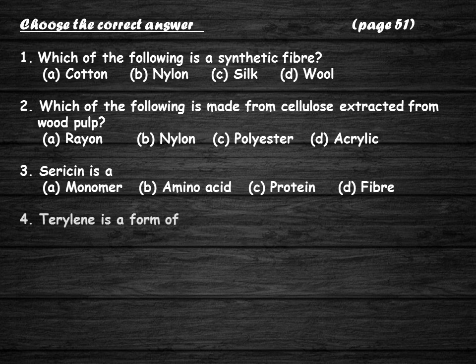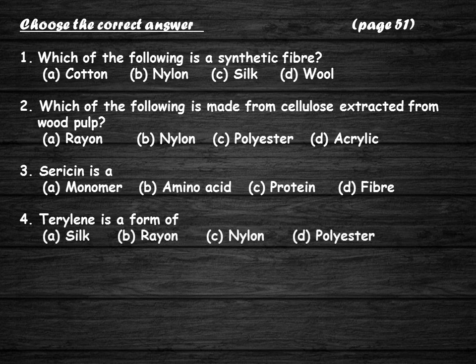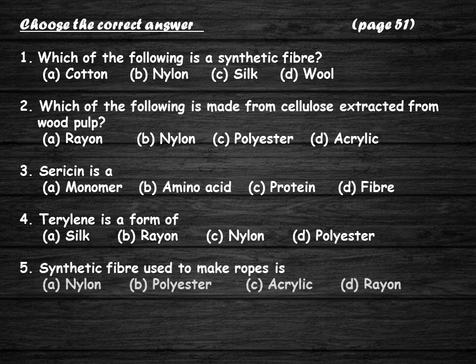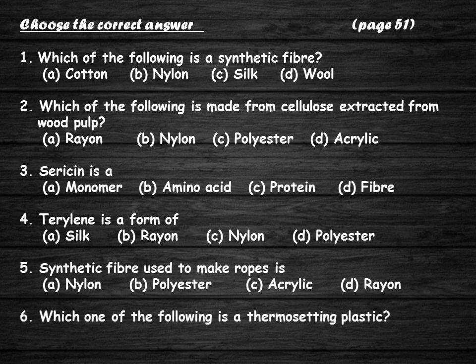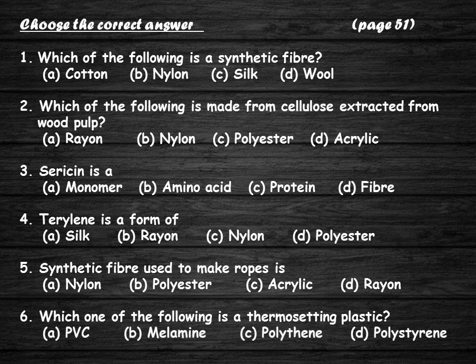Question four: terrylene is a form of — silk, rayon, nylon, or polyester? Question five: the synthetic fiber used to make ropes is — nylon, polyester, acrylic, or rayon? Question six: which one of the following is a thermosetting plastic — PVC, melamine, polythene, or polystyrene?